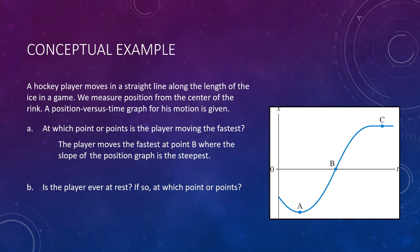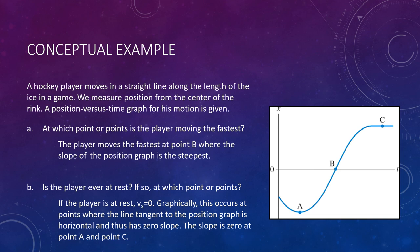Part B asks: is the player ever at rest? If so, at which point or points? At rest means zero velocity, which means zero slope — asking where the slope is zero on this position graph. At A, for just a moment in time, the slope is zero right at the bottom of the curve, so the player is momentarily at rest. Up at C, we see a clear horizontal line — zero slope — so the player is also at rest at C.